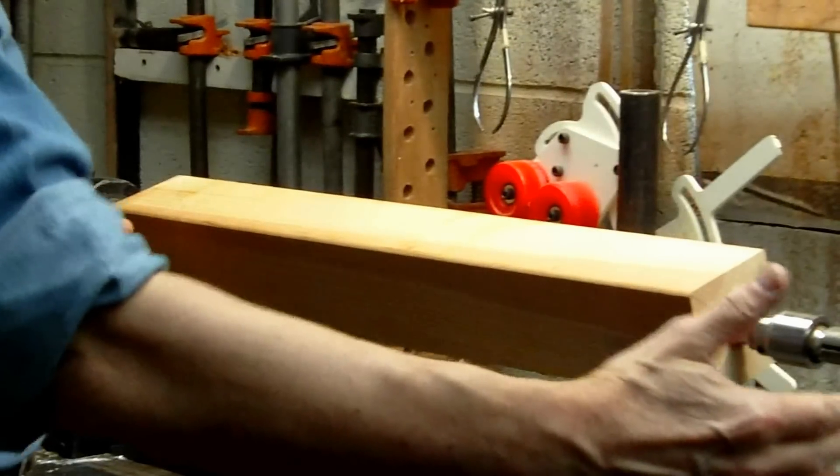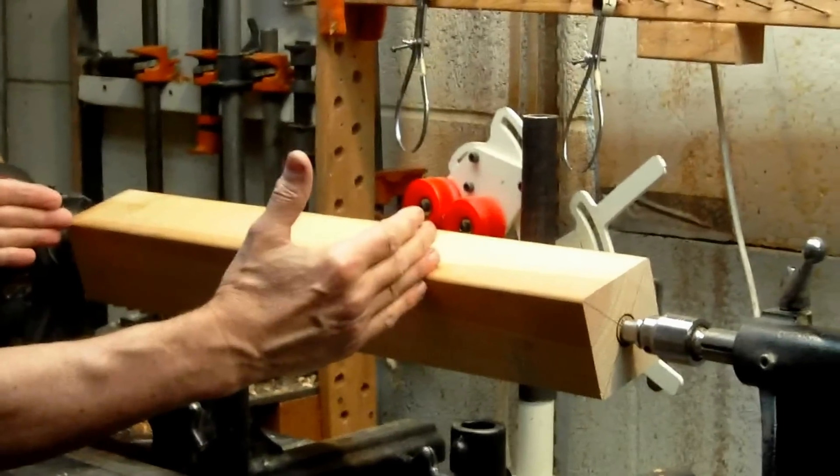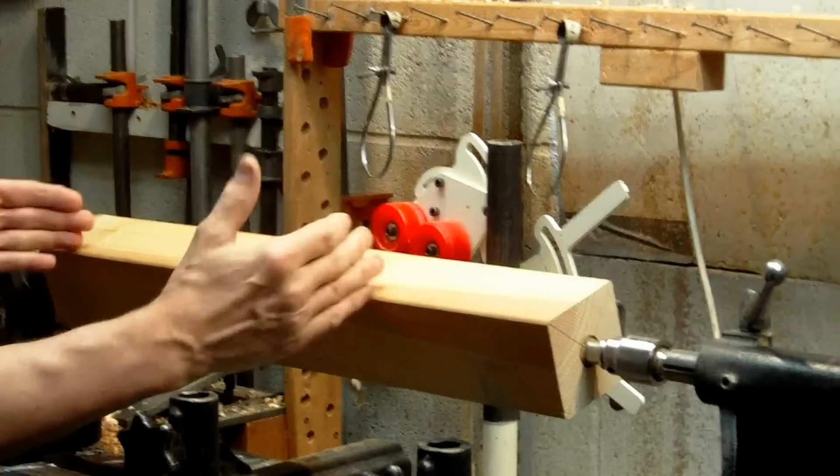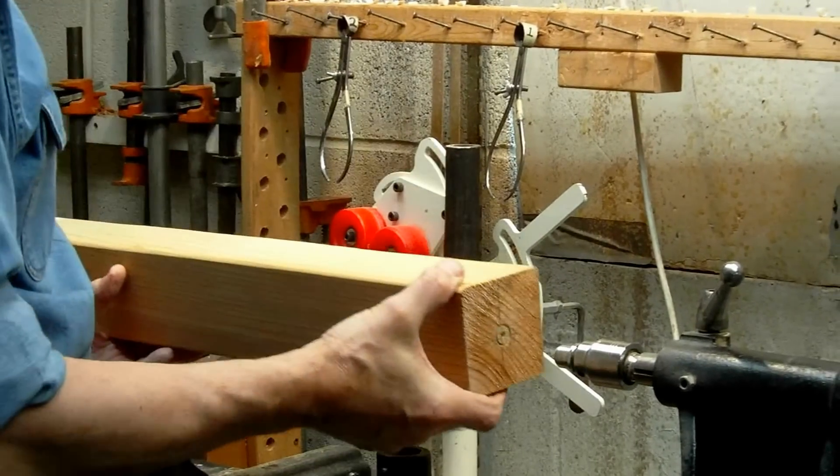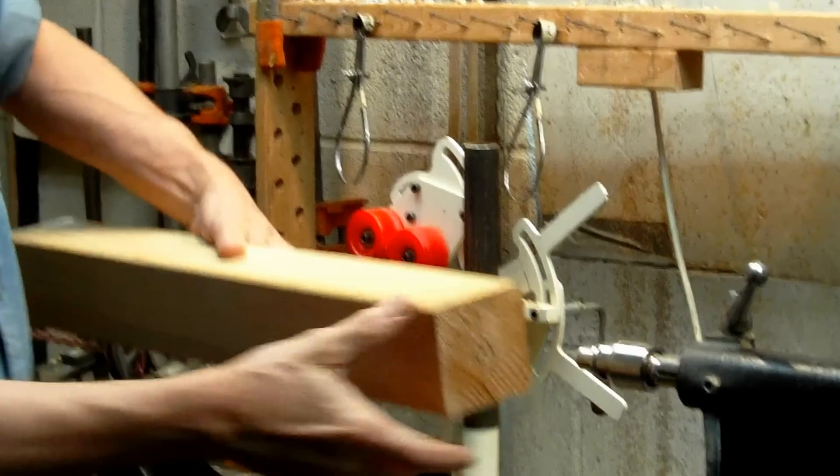Once the center's on each end, then it's real easy to turn it end for end and still be on center. The benefit to you is if you only have a tool rest that's this long, instead of having to move it every time, you simply back off your tailstock and flip your wood and now finish cutting up here.